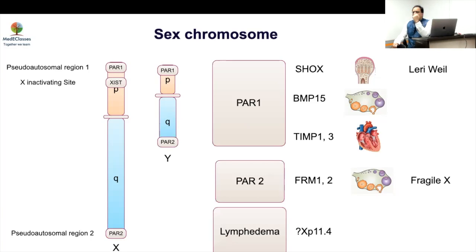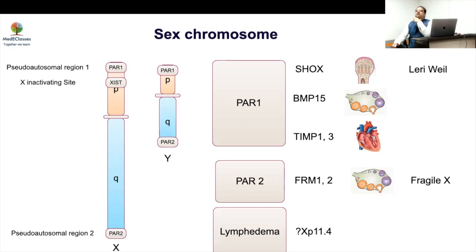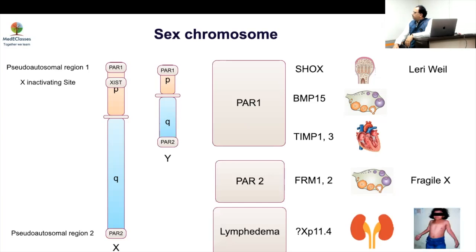There is also a lymphedema region, which is not very clearly defined, that is responsible for lymphatic development. If that region is affected, there will be lymphedema, which can cause cardiac problems, venous problems, and webbing of the neck — all arising from that developmental disruption.